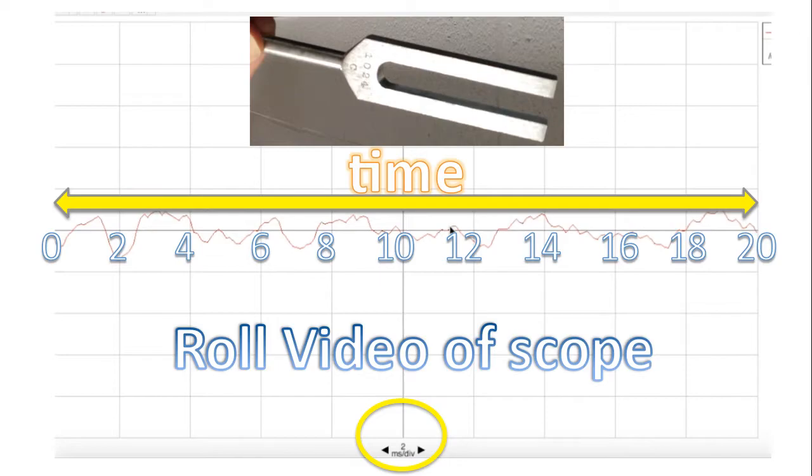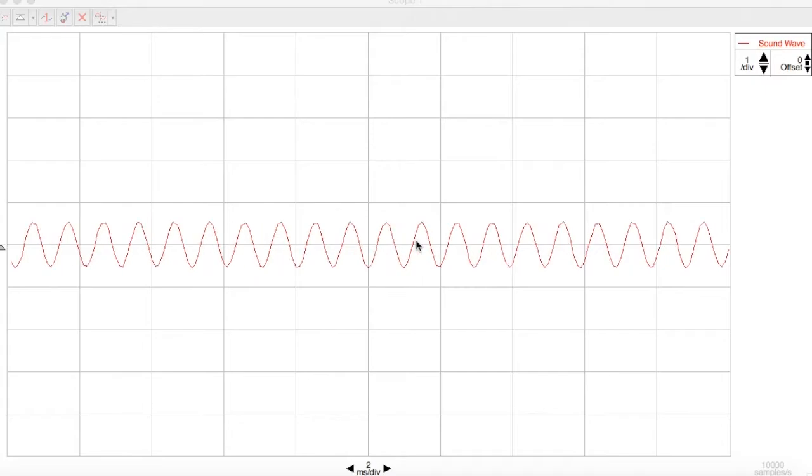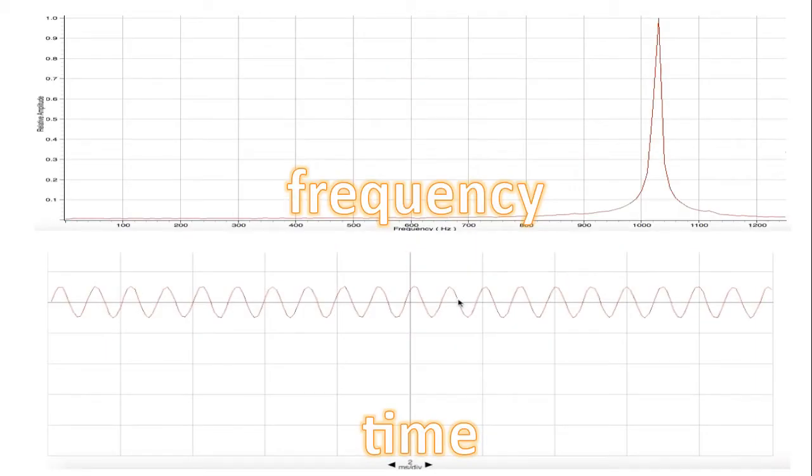Let's roll the video now for the tuning fork. Notice that for the most part, a simple sound consists of a sine wave. Simple sounds consist of a single frequency, and that single frequency produces more or less a sine wave.